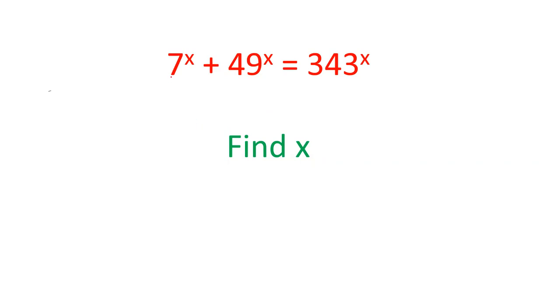Let's see how we can solve this question. The question is 7 power x plus 49 power x is 343 power x. We have to find the value of x.